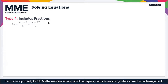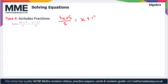Here we're looking at equations involving fractions. We have (4x + 5) / 5 which is equal to (x + 17) / 3. So let's rewrite this expression: (4x + 5) / 5 = (x + 17) / 3. As usual, the goal here is to get x on its own.